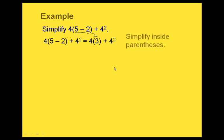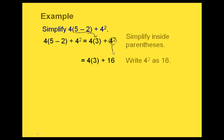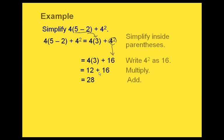Our next step: we have a multiplication and we also have an exponent. So our next step would be to simplify the exponential part — we're going to write 4 squared as 16. Now we have a multiplication and an addition, so the multiplication comes first. We multiply 4 times 3 to get 12, and then our last step is to add the 12 and the 16 to get 28.